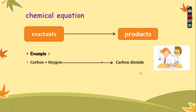Do you remember, my dear students, when I told you that in chemistry we usually use symbols as shortcuts? We don't use the long name of carbon, but we use only its first letter. So instead of writing carbon, I will write C — this is the symbol. Carbon, which is C, will react...